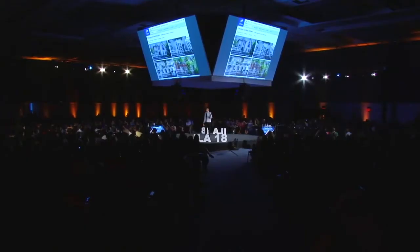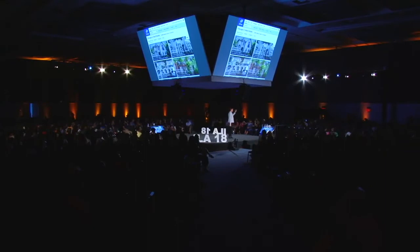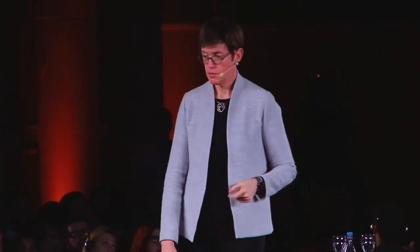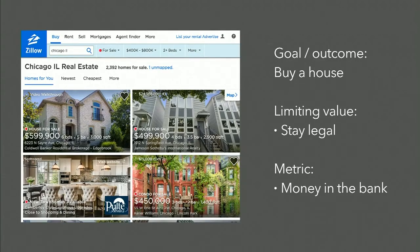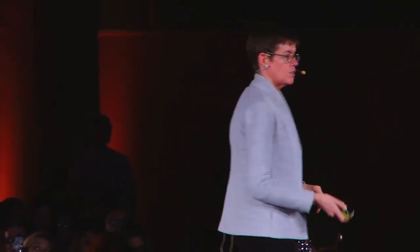Talking about the goal explicitly also helps us open up to a wider range of solutions. Let's say our goal is to buy a house — there are a lot of solutions: save money by sacrificing other things, inherit from a rich relative, win the lottery, or rob a bank. Values tell us which of those options are just not okay. Values limit our solutions appropriately. If one of our values is not breaking the law, robbing a bank is out. So if our goal is to buy a house, our limiting value is to follow the law, and our metric is money in the bank — but we never want to forget that the goal is buying the house, because if that money is just accumulating in the bank, that doesn't do anything for us.